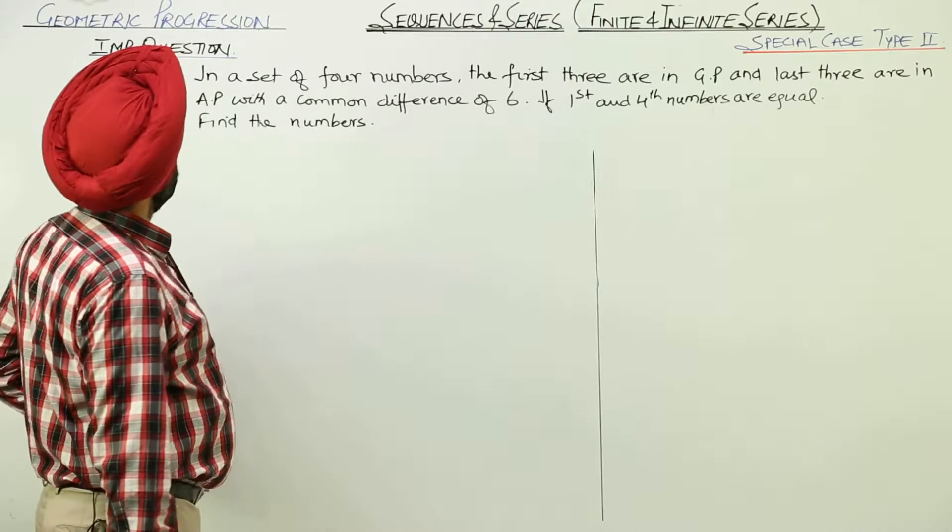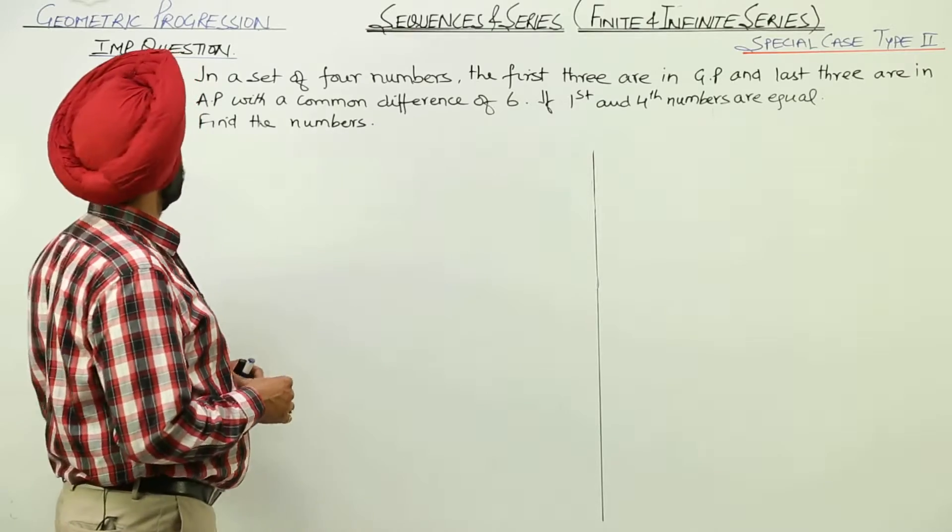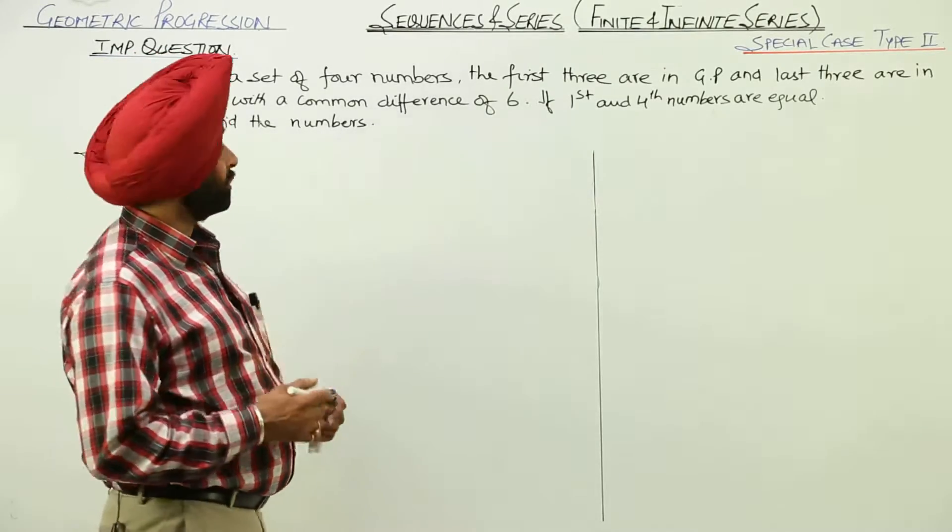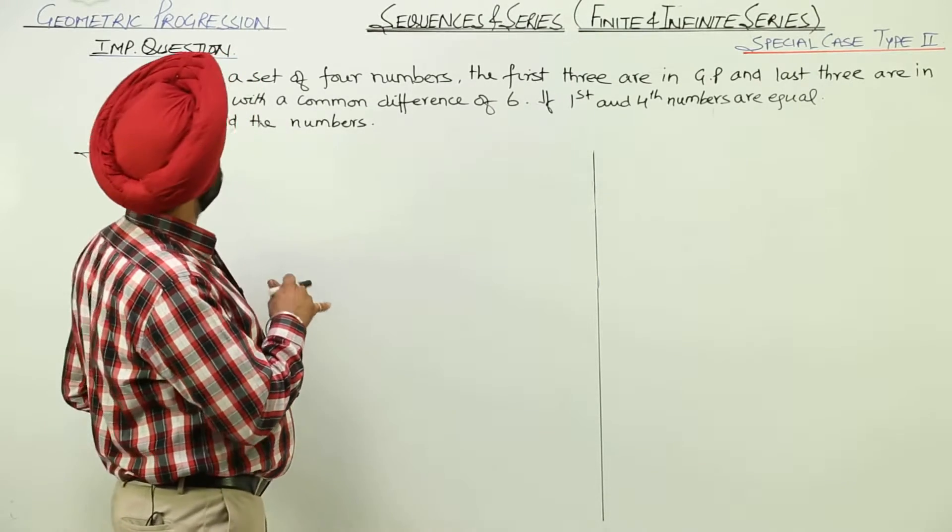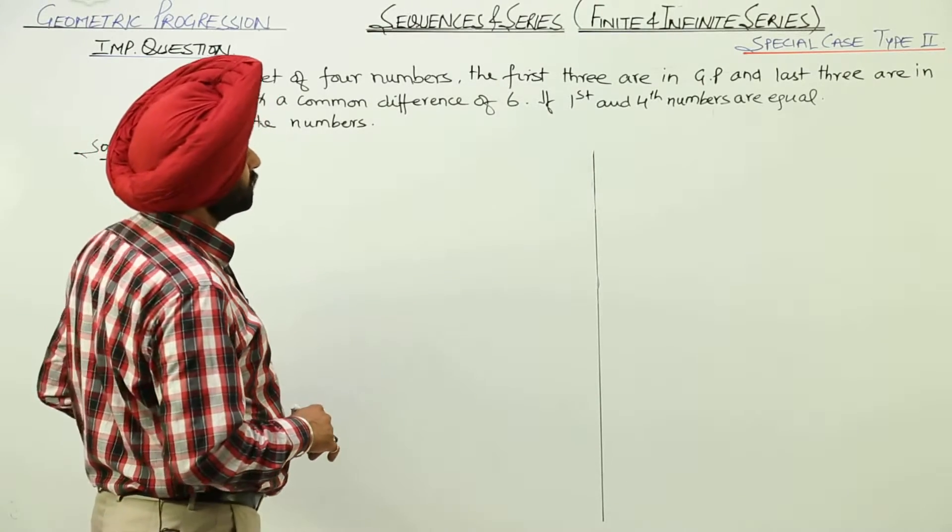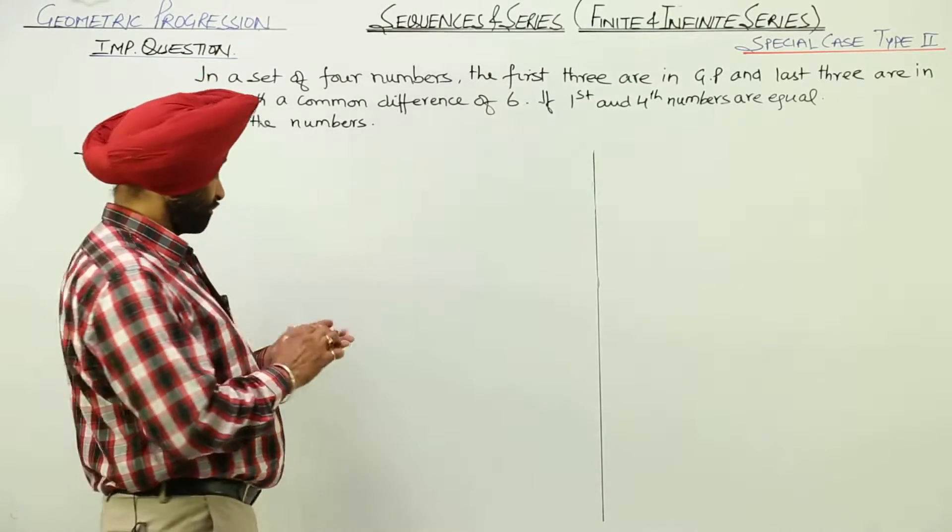Now next question, in a set of 4 numbers, the first 3 are in GP and the last 3 are in AP. Again, combination of GP and AP numbers. And for the AP series, last 3 numbers they are having common difference 6. If first and fourth numbers are equal, we have to find all the 4 numbers.